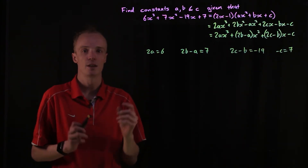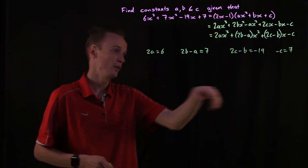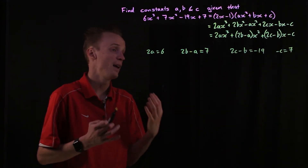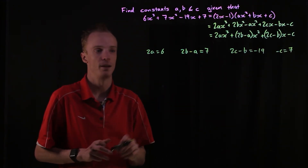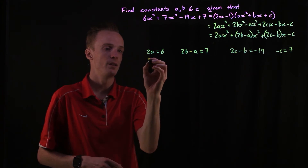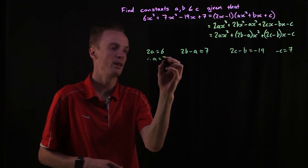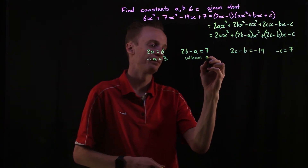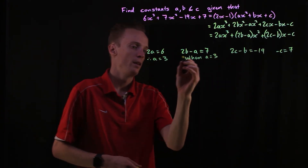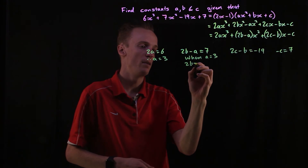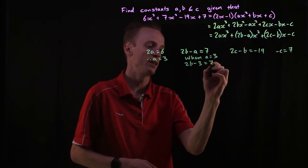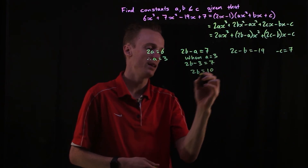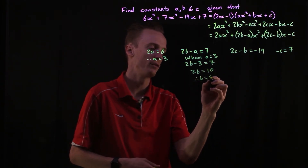So what we can do now is solve for a here, solve for c here, and use those to determine what my b value would be. So if 2a equals 6, therefore my a must be equal to 3. When my a is equal to 3, my 2b minus 3 must equal 7. So that means my 2b must be equal to 10, so therefore my b must be equal to 5.